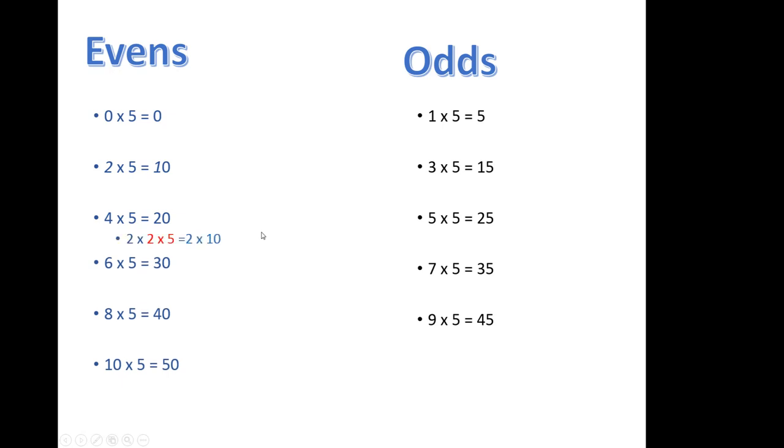Four times five is the same as two times two times five, or two times ten. Regrouping numbers like this is a really powerful way of figuring out problems that look hard.